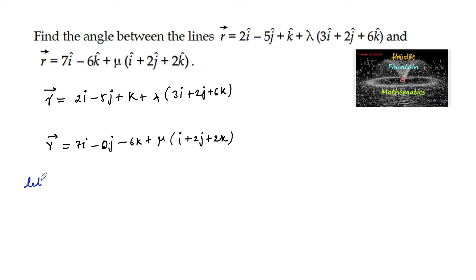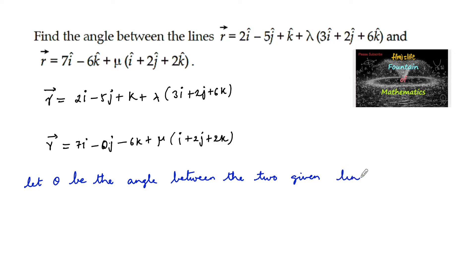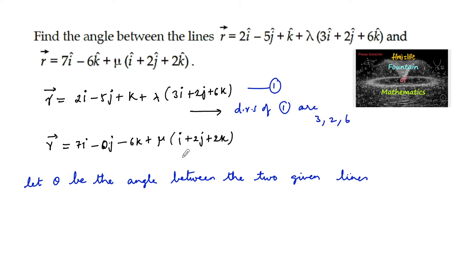Let theta be the angle between the two given lines. For line equation 1, it is passing through the point (2, -5, 1) and the parallel vector is 3i plus 2j plus 6k, so the direction ratios of the first line are 3, 2, 6. For the second line, it is passing through the point (7, 0, -6) and the parallel vector is i plus 2j plus 2k, so the direction ratios of the second line are 1, 2, 2.